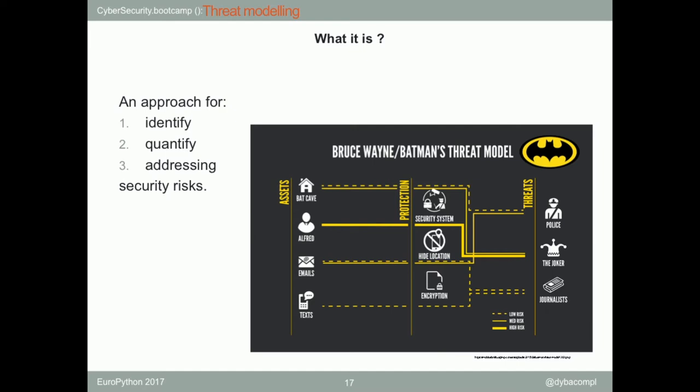Let's try mitigating those issues. We can obscure Alfred's location and his identity, but in the current world it's really hard to do. The Batcave is a much simpler task because there are security systems, traps, and misleading bases of operations — we have a ton of possibilities. For the emails and messages, we can start encrypting them, which is the basic approach, and we should be cautious when typing something that may be delicate for us.